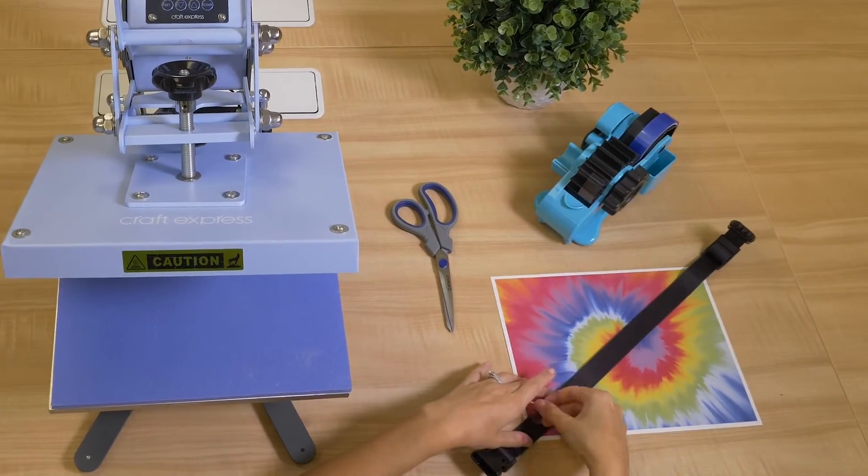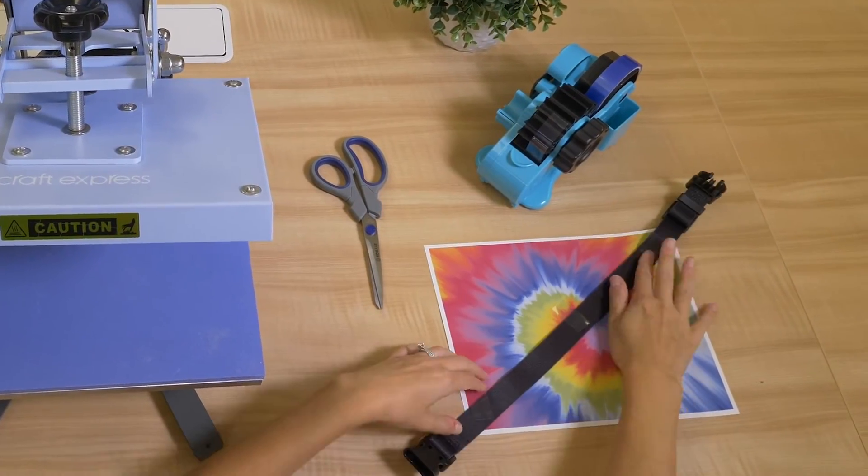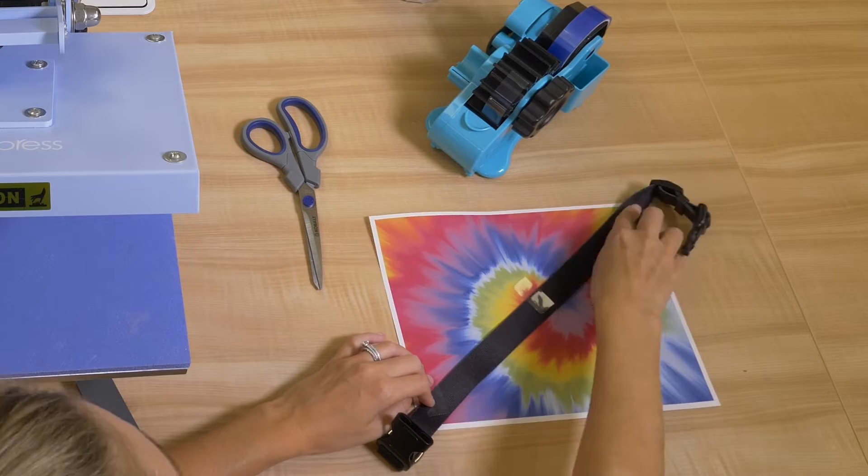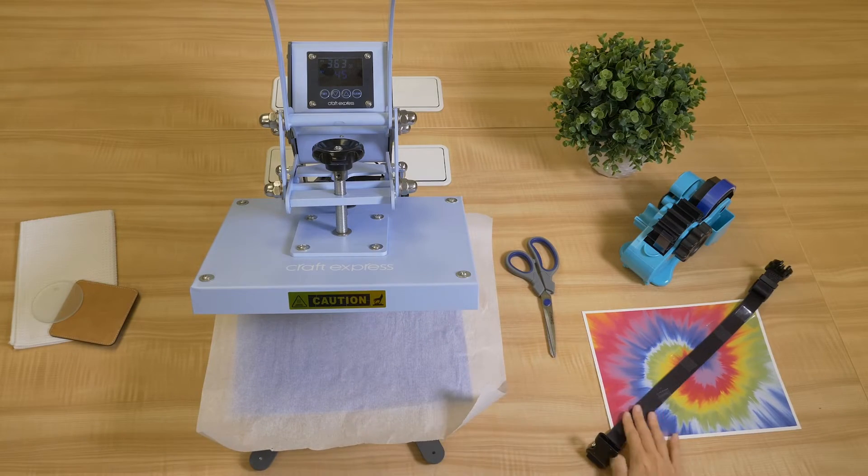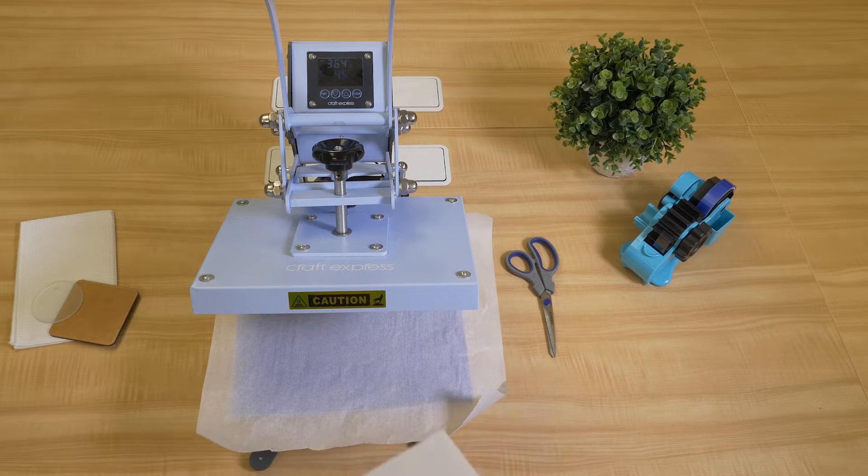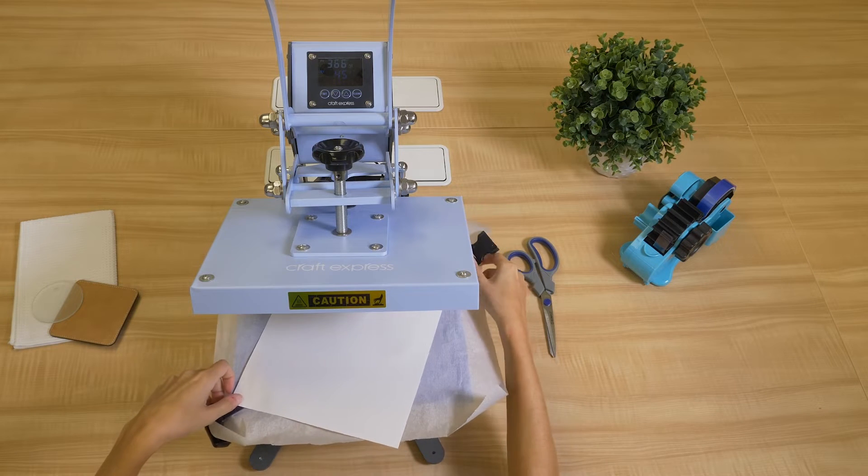Tape your design to your collar using heat transfer tape. Note, lay parchment paper or butcher paper under your collar to keep ink from getting on your press.